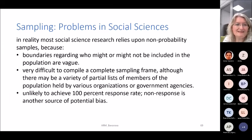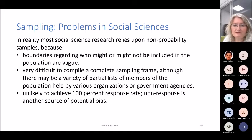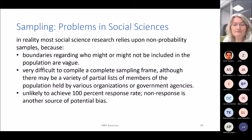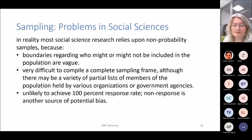The problem in social sciences is that in reality most research relies on non-probability samples, because defining population boundaries is difficult. It is also very difficult to compile a complete sampling frame. Additionally, it is unlikely to achieve 100% response rate — not everyone will open the door, not everyone will answer a phone interview. Therefore, we will very rarely be able to achieve a truly random sample.